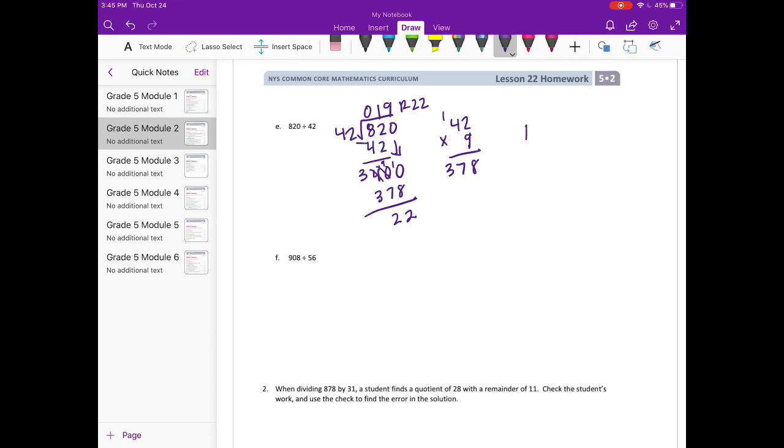And to check, we have 19 times 42. 19 times 42 is 798. And 798 plus 22 is 820. So that works.